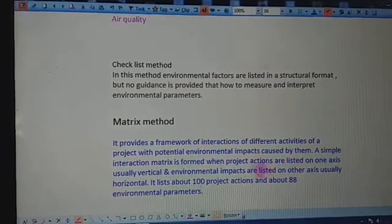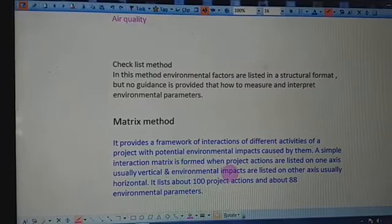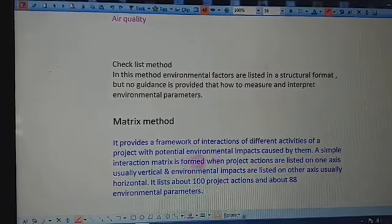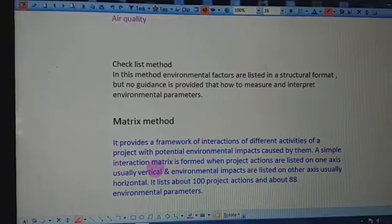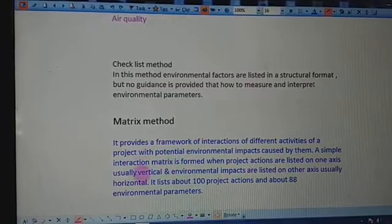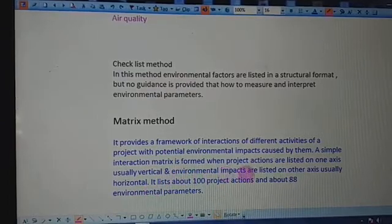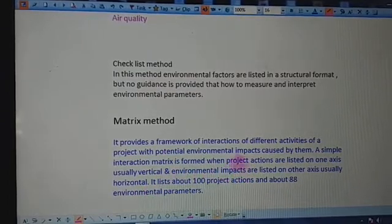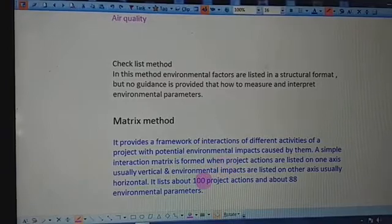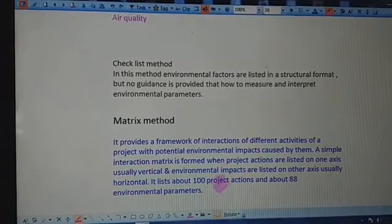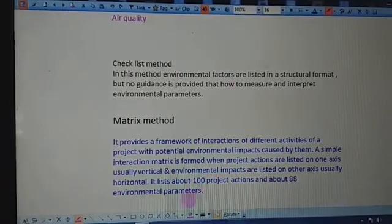A simple interaction matrix is formed when project actions are listed on one axis, usually the vertical y-axis, and environmental impacts are listed on the horizontal x-axis. We can list about 100 project actions and about 88 environmental parameters.